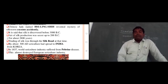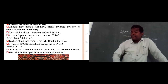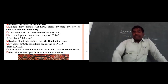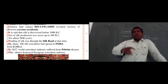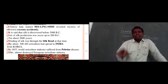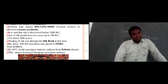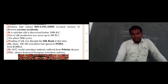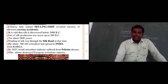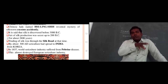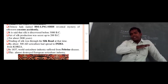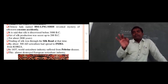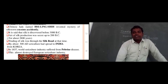In 1857, the sericulture industry suffered from a dangerous disease attack called pébrine disease, which is caused by a protozoan parasite. This almost completely destroyed the European sericulture industry.